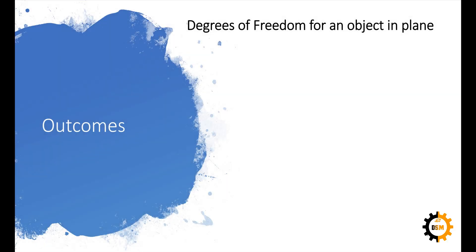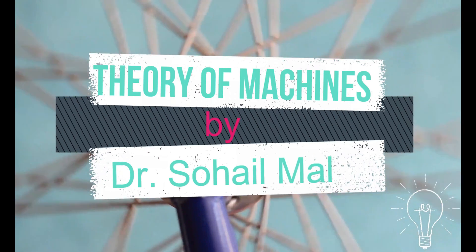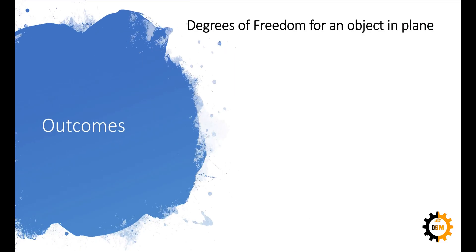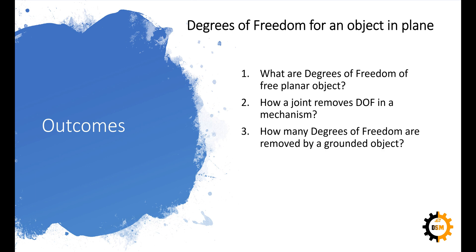In this interaction, we are going to discuss degrees of freedom for an object in a plane. The outcomes of this interaction will help you understand and answer these questions: What are the degrees of freedom of a free planar object? How does a joint remove degrees of freedom in a mechanism? How many degrees of freedom are removed by a grounded object? The total number of slides including this one will be 4.